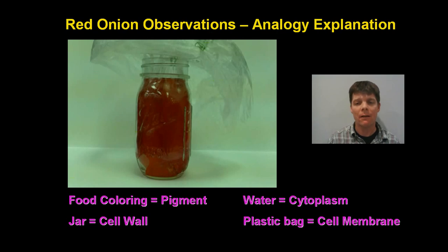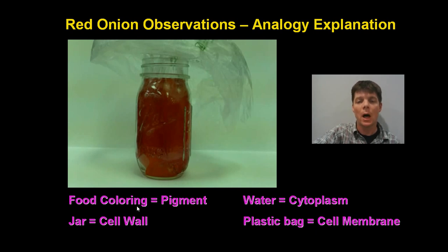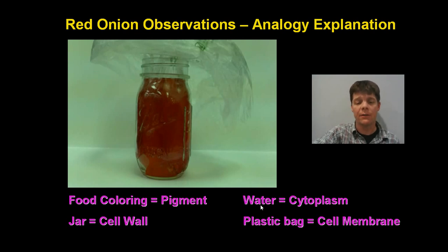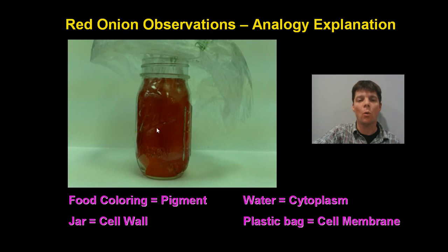I like to use an analogy to explain what's happening in those red onion cells. We're going to use inside of this jar some food coloring, which represents the pigment inside of the red onion cells. The water inside of the jar represents the cytoplasm. The jar itself represents the cell wall of the plant cells — the onion cells. Finally, the plastic bag that you can see here represents the cell membrane. The plastic bag is inside of the jar, the water is inside of the plastic bag, and there's been food coloring added to the inside of the bag.